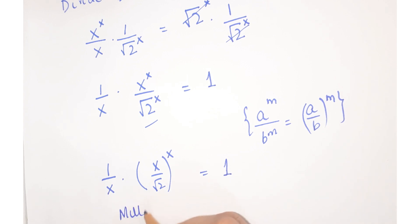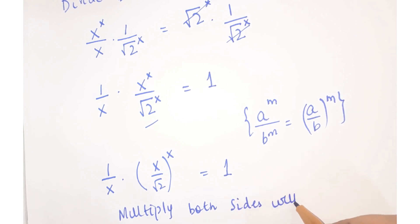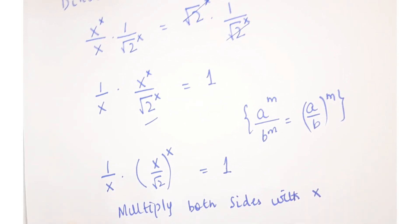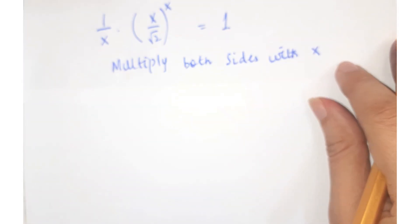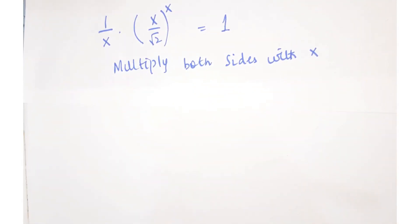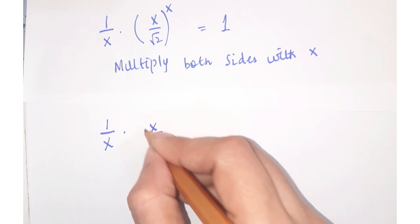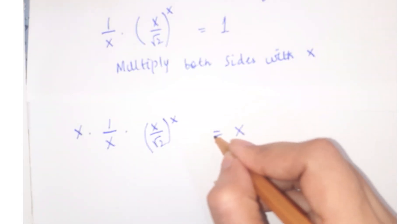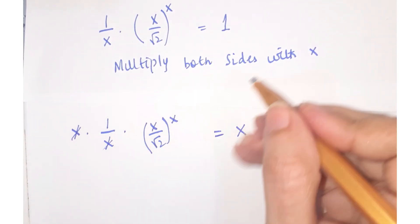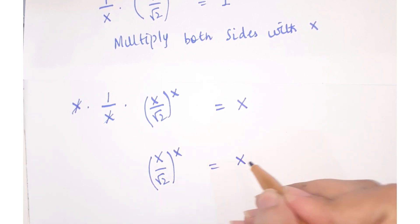Now we are going to multiply both sides by x. You can see that 1 upon x into x upon under root 2 whole to the power x, multiplied with x, is equal to x. This term gets cancelled, so we get x upon under root 2 whole to the power x is equal to x.